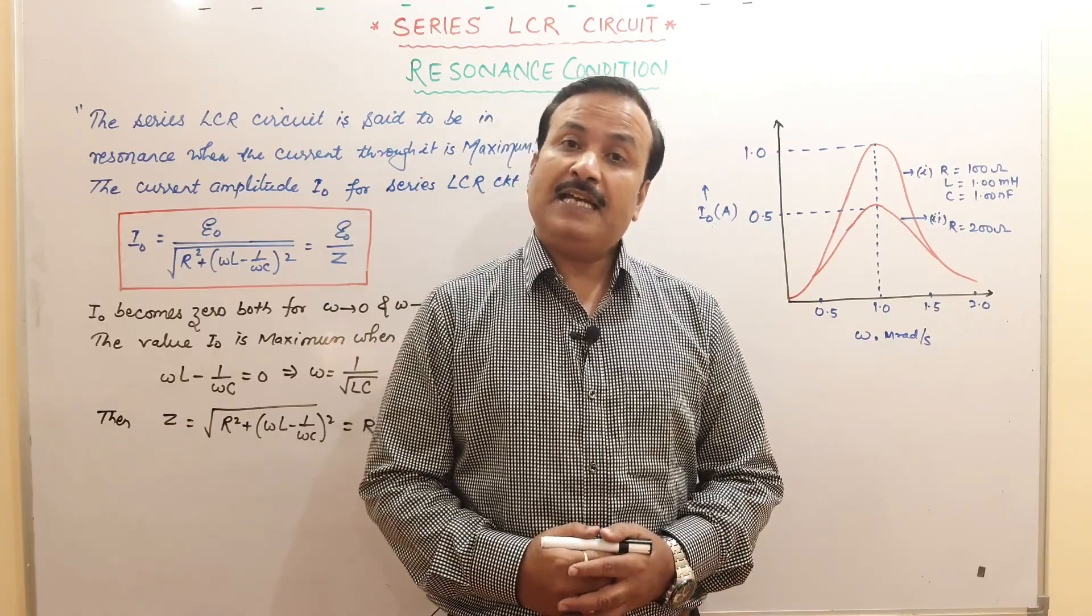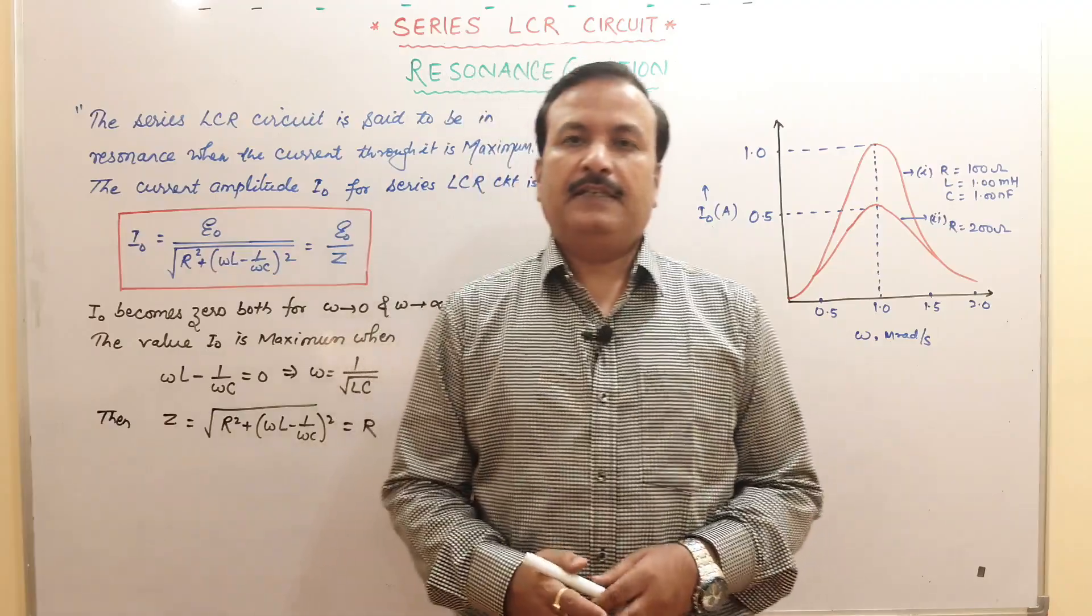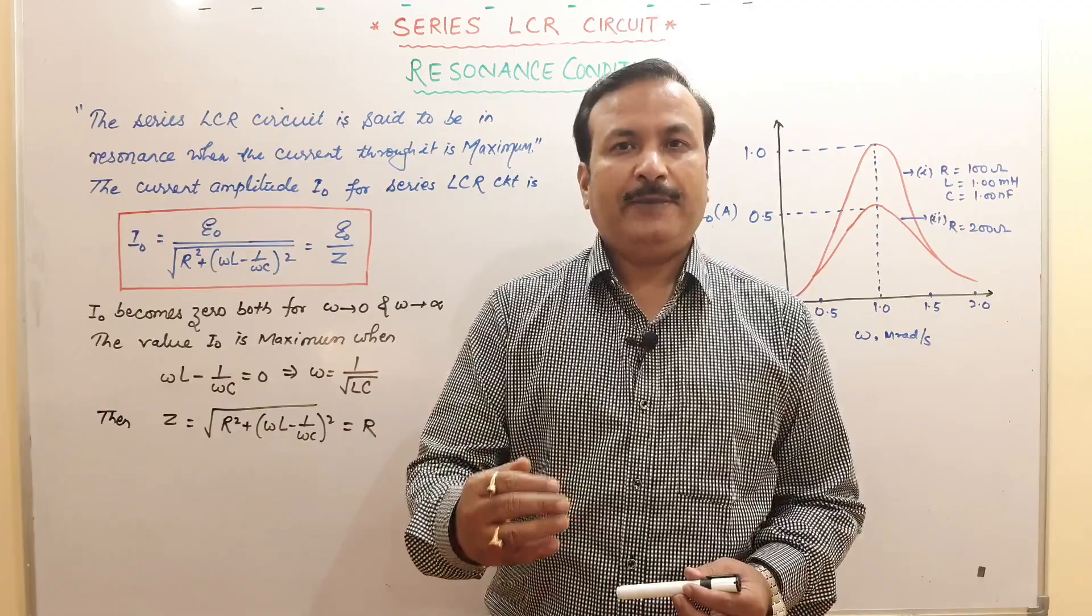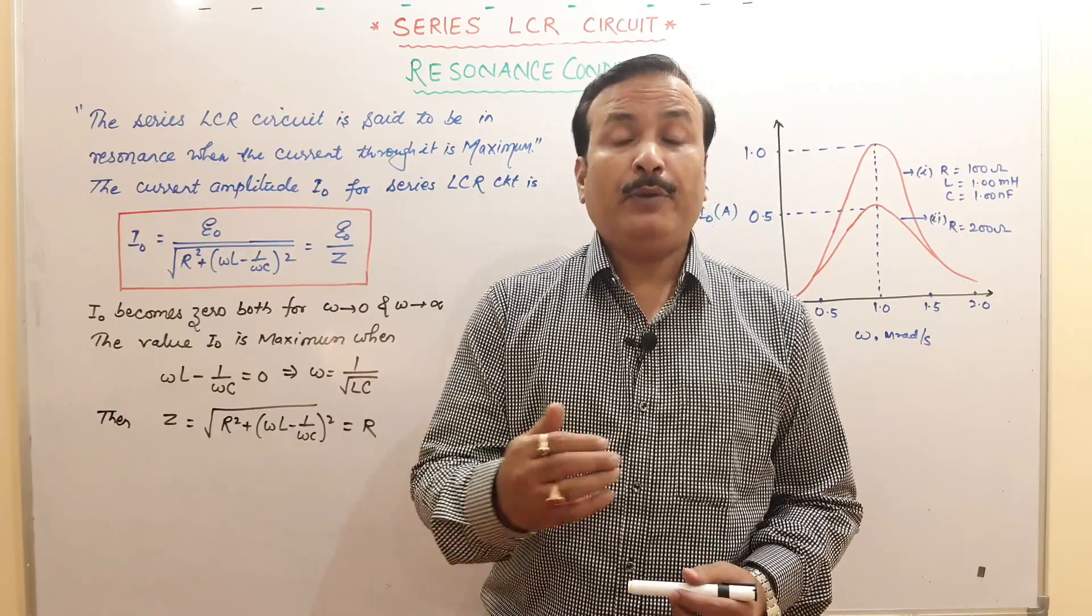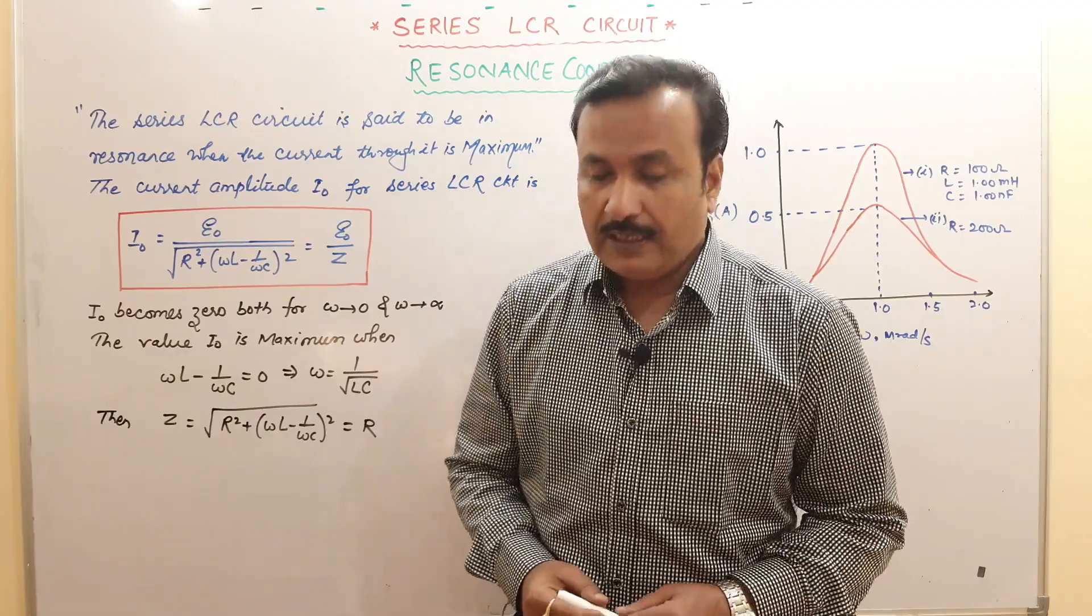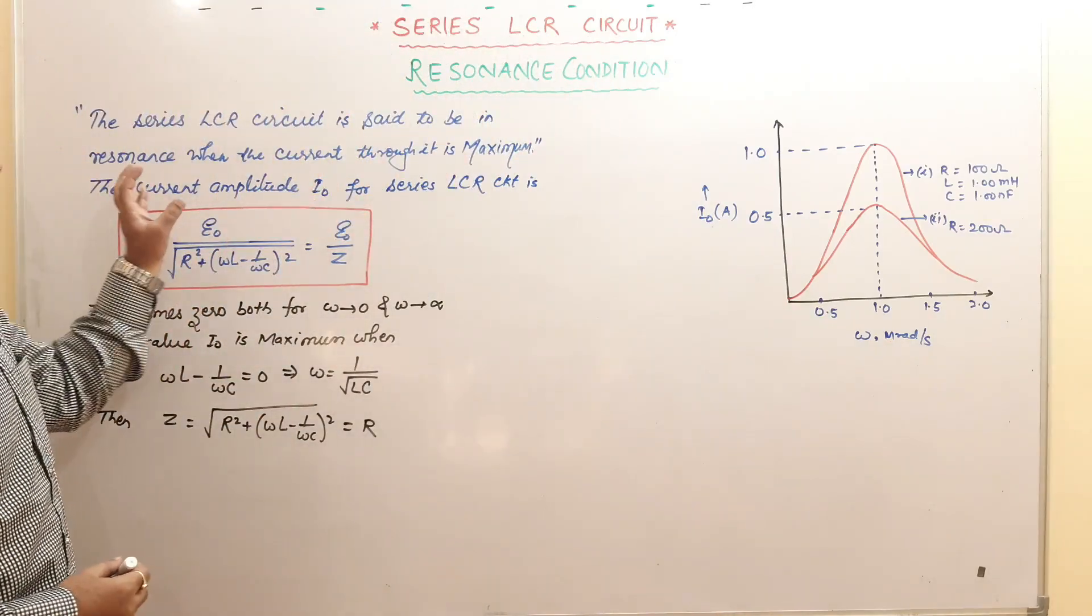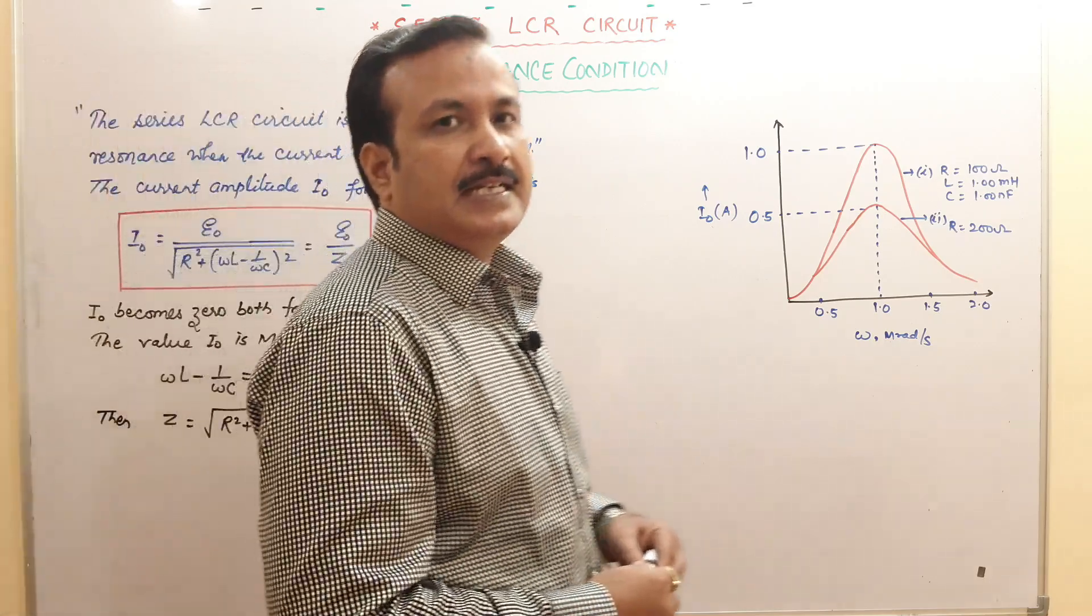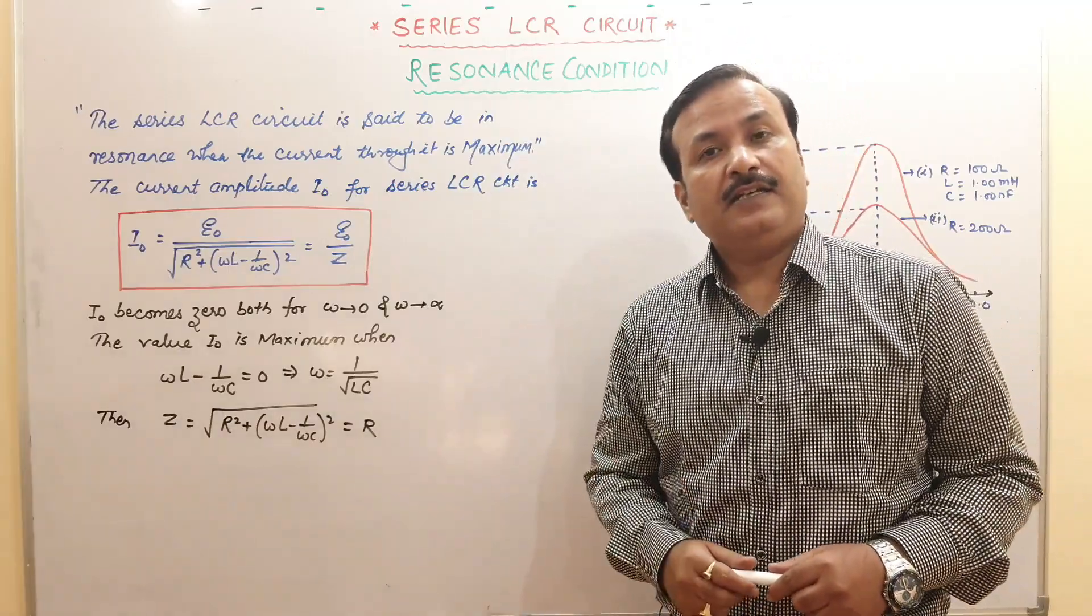When will you say that LCR circuit is resonant? We need to discuss what is the resonance, what happens after the resonance, and what happens to the frequency which is called resonant frequency. The series LCR circuit is said to be in resonance when the current through it is maximum. When current is maximum in the LCR circuit, we say the LCR circuit is in resonance.